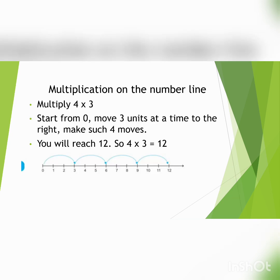Now, multiplication on the number line. Multiply 4 multiply 3. First draw the number line, starting from 0, 1, 2, 3, 4, 5, 6, 7, 8, 9, 10, 11, 12. Start from 0 and move 3 units at a time to the right. Make such 4 moves. You can see children, I have shown you down. You will reach 12. So 4 multiply 3 equals 12.